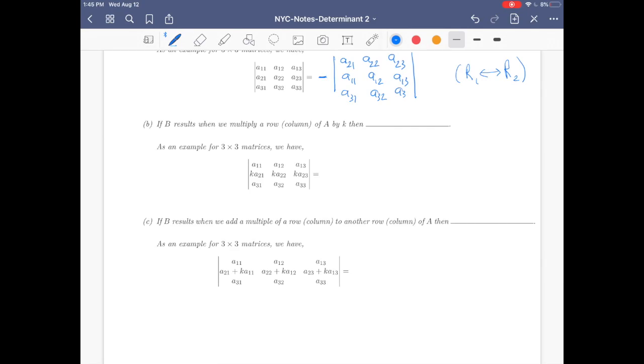Part B: If B results when we multiply a row or column of A by K, K is a scalar, then we have the determinant of this new matrix is K times the determinant of the original matrix. As an example for three by three matrices, look at this matrix. Basically, the way you can translate property B to this matrix is whenever you have a common K in one row, then basically you can factor that K.